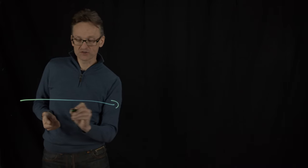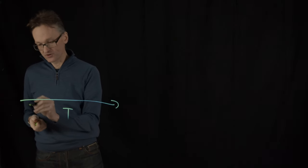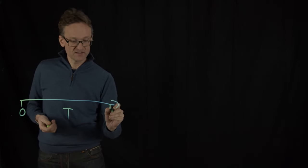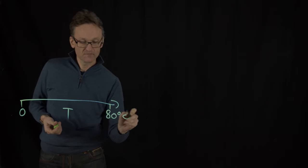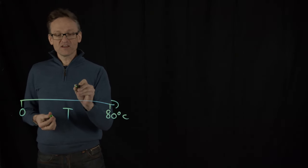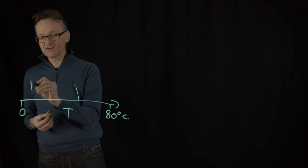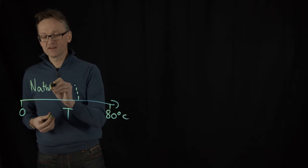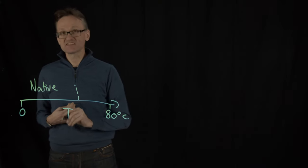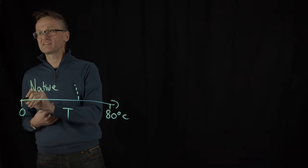It turns out that there are two ways we can denature proteins. The obvious one is temperature. So if I just draw something as a function of temperature going from, say, zero to 80 degrees centigrade or so, at some point here I'm going to start denaturing the protein, and here I have a native one.